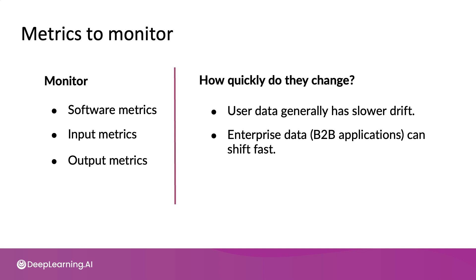In contrast, if you work on a B2B or business-to-business application, I find that enterprise data or business data can shift quite quickly. Because a factory making cell phones may suddenly decide to use a new coating, and suddenly the entire dataset changes because the cell phones all look different. And if you're providing a machine learning system to a company, sometimes if the CEO decides to change the way that business operates, all of that data can shift very quickly. These two points are generalizations and there are certainly exceptions to both, but maybe this gives you a way of thinking about how quickly your data is likely to change or not change.